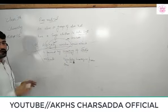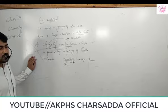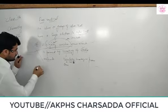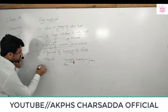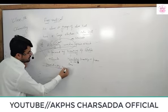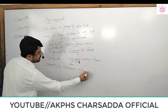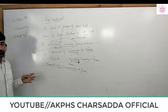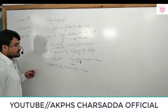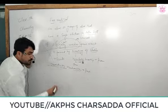A free radical is a highly reactive species because it is unstable. For stability, it needs to attack another atom or molecule to stabilize itself. Because of this instability it reacts very fast with another atom or molecule to become stable.